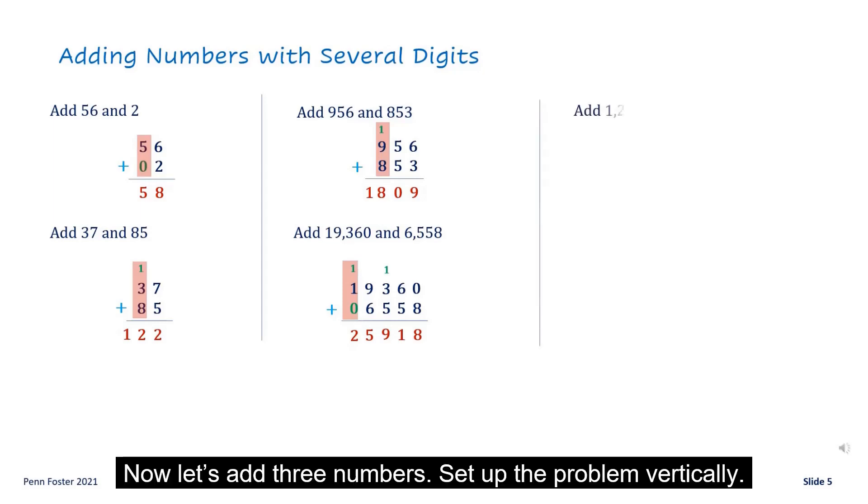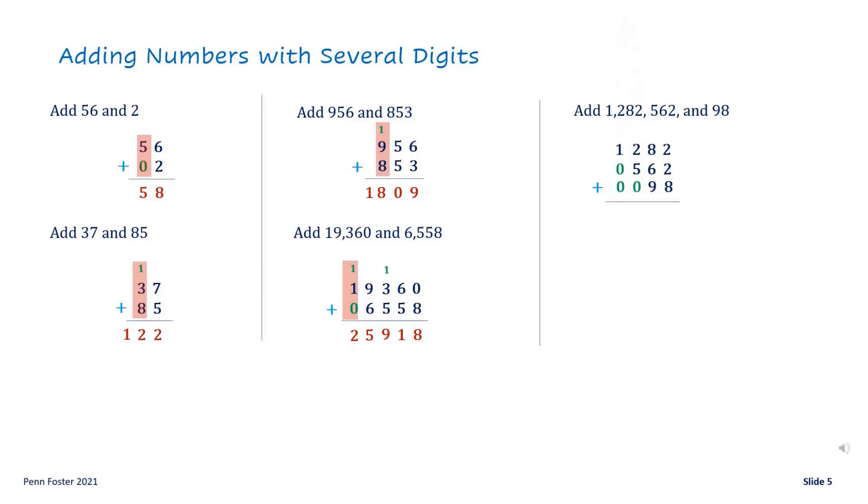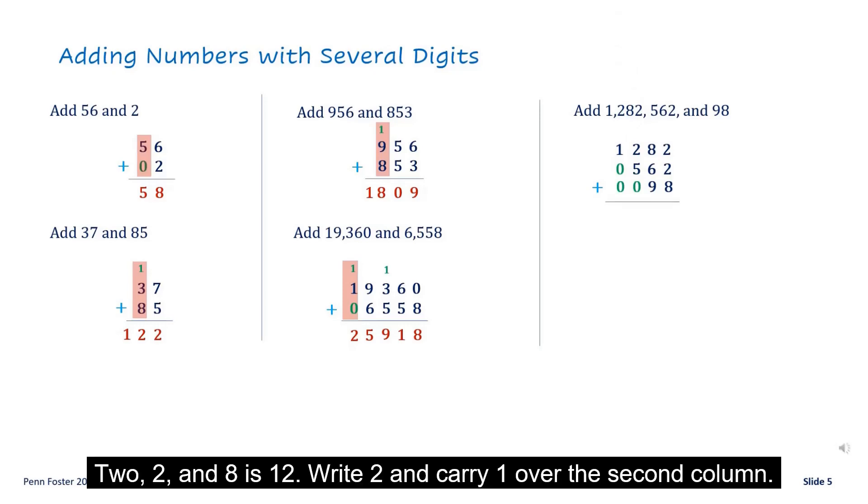Now let's add three numbers. Setup the problem vertically. Fill in the spaces with three zeros. Add in columns as before. Two, two, and eight is twelve. Write two and carry one over the second column.